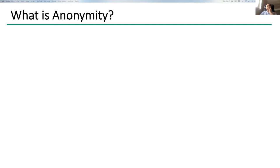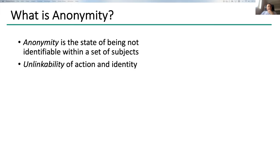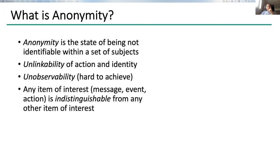What is anonymity? Anonymity is a state of being not identifiable within a set of subjects. You cannot be anonymous if you are only yourself, because it would be attributable to one person. It's the unlinkability of action and identity — your data shouldn't be linkable. There's also unobservability, and any item of interest like a message, event, or action should be indistinguishable from any other item of interest.